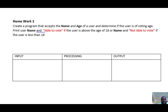Now let's look at the problem we had. It says to create a program that accepts the name and age of a user and determines if the user is of voting age. Print the user's name and 'able to vote' if the user is above the age of 18, or name and 'not able to vote' if the user is less than 18 years of age.